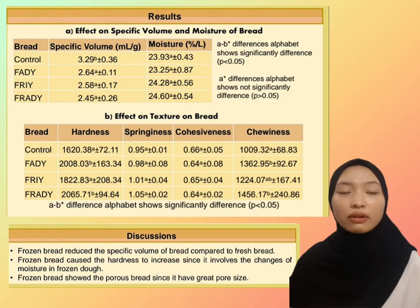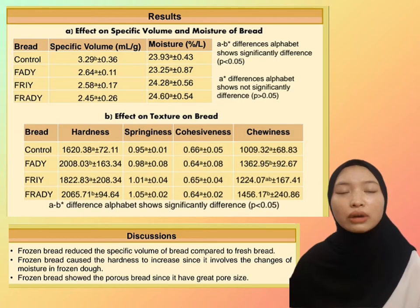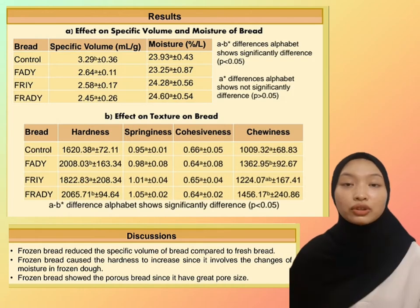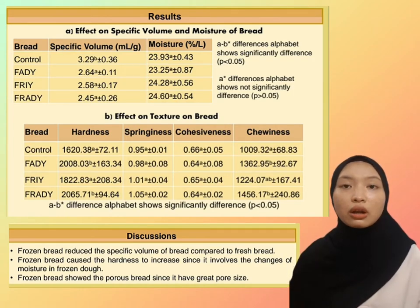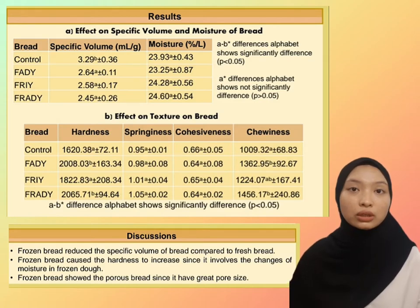From the analysis conducted, the specific volume of fresh instant yeast bread shows a significant difference compared to the other breads. Frozen instant yeast and frozen active dry yeast bread samples were found to have lower specific volume. Frozen bread reduced the specific volume compared to fresh bread even though different types of yeast were used. This reduction was caused by the formation of ice crystals that led to water redistribution during the freeze-thaw cycle, which also affected proofing time.